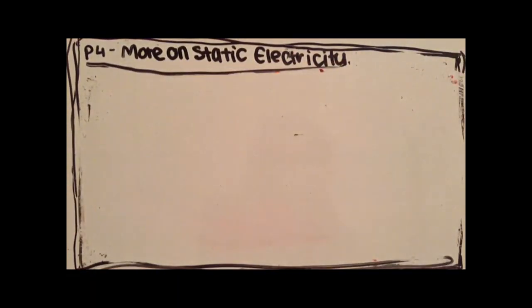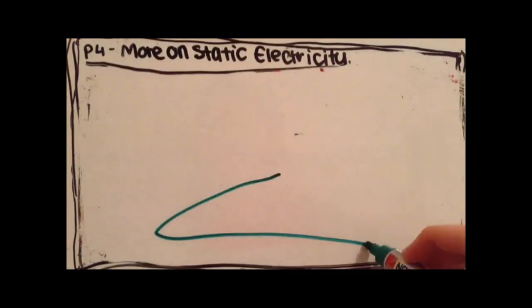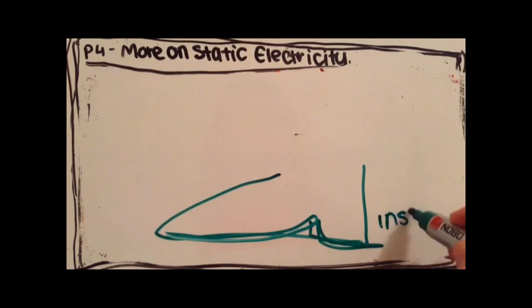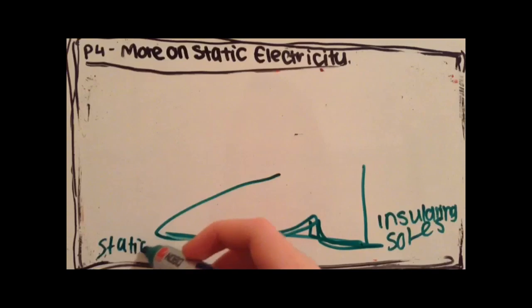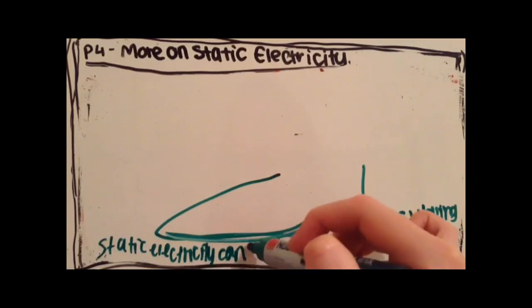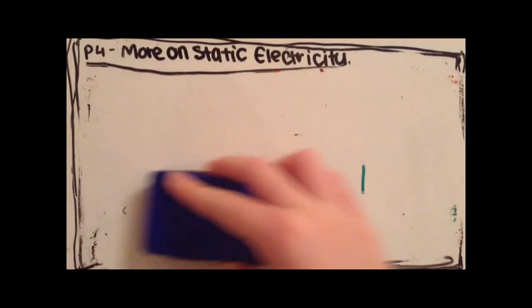Another object that can be insulated to prevent sparks is mats and shoes. Insulating mats and shoes with insulating soles prevent static electricity from moving through them, so this stops you from getting a shock.